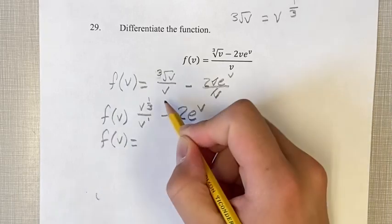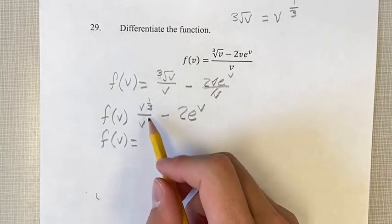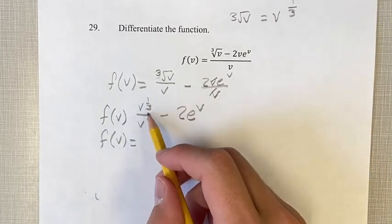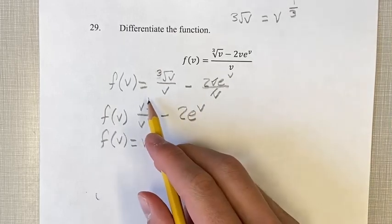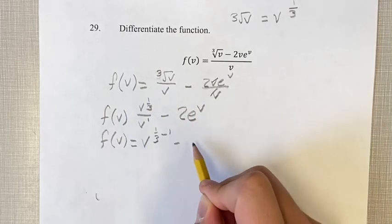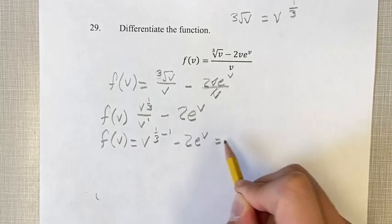Our next step, we have the quotient rule here, and you have two exponents and you're dividing them. You can subtract them and turn them into one term. It's going to be 1 third minus 1 minus 2 e to the v.